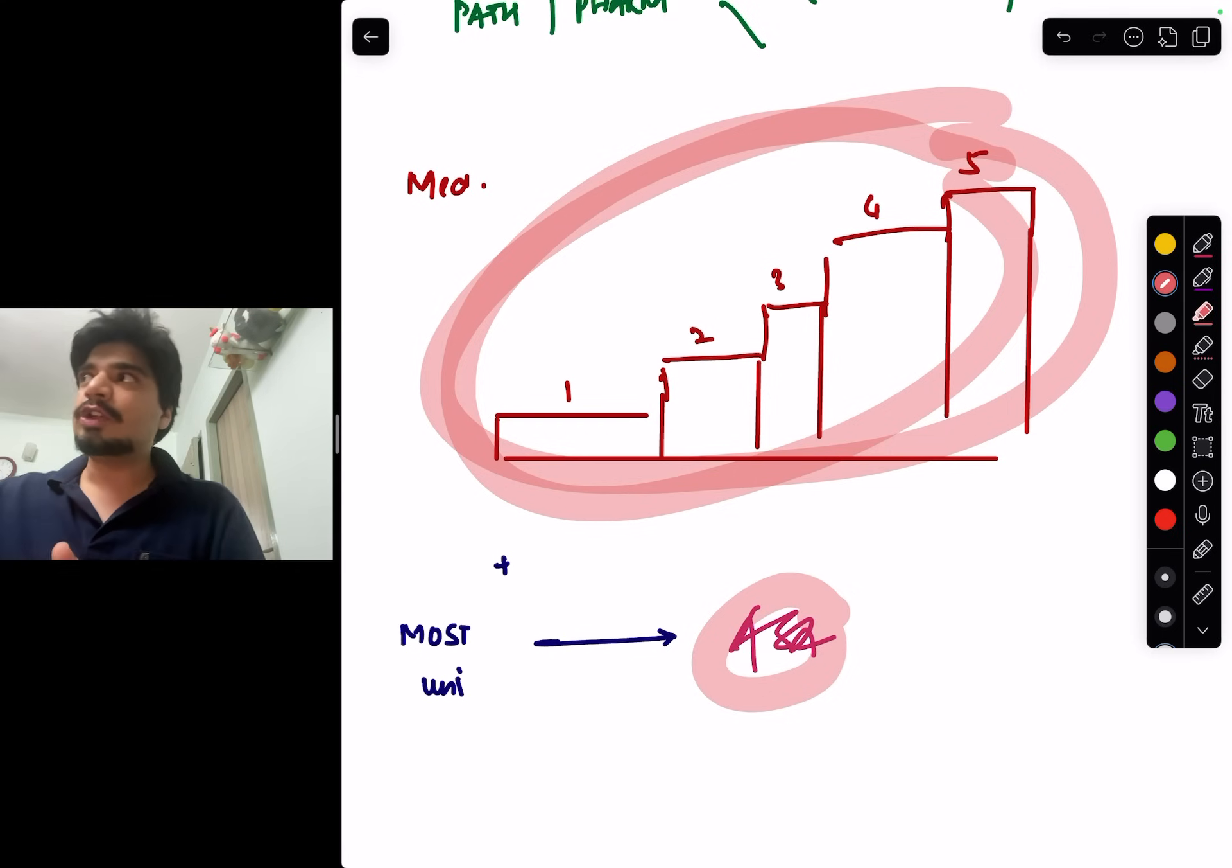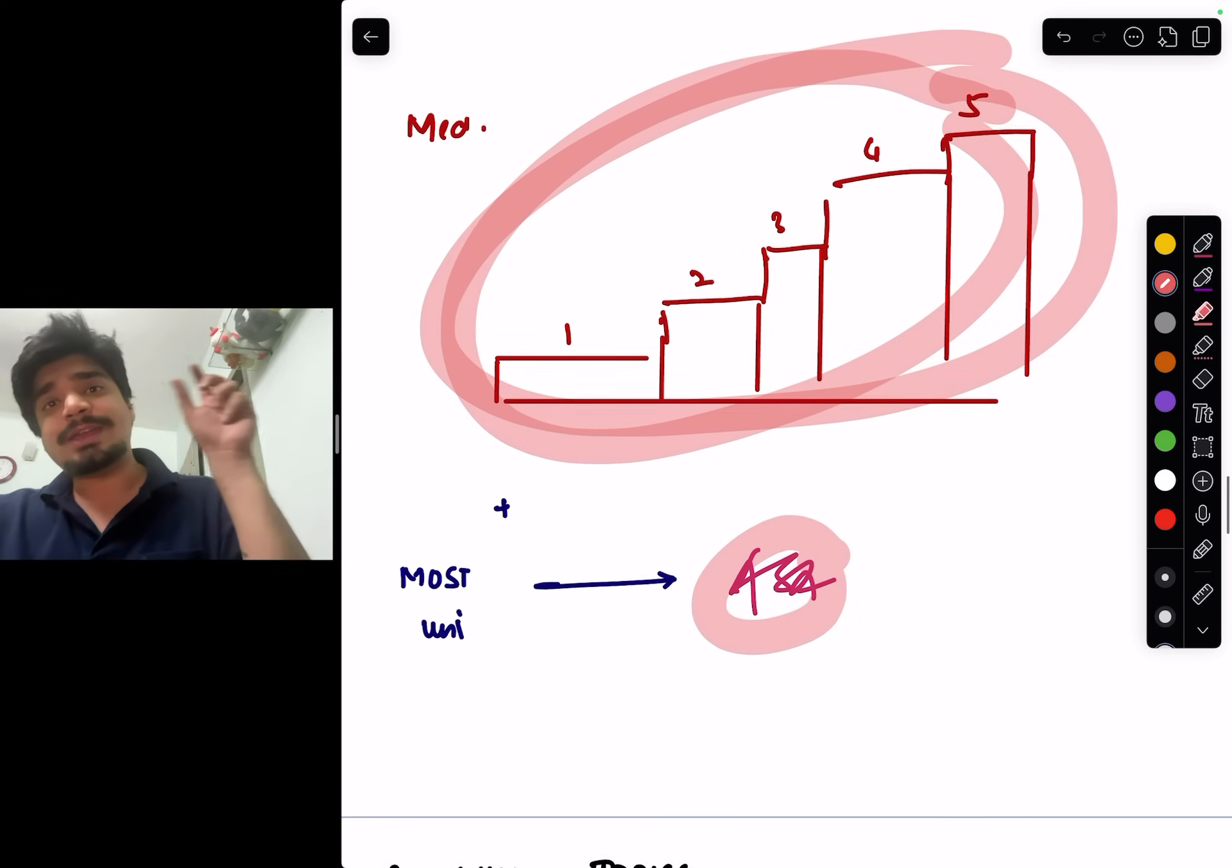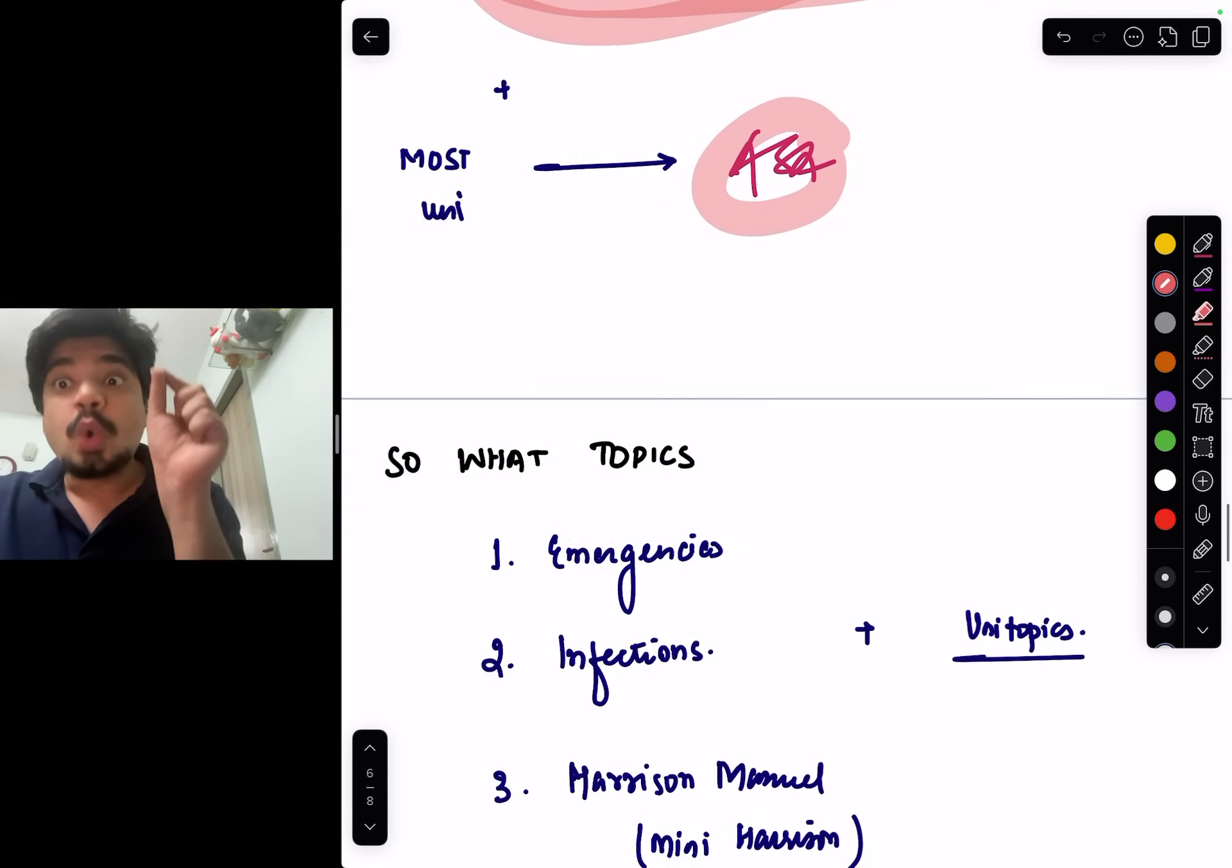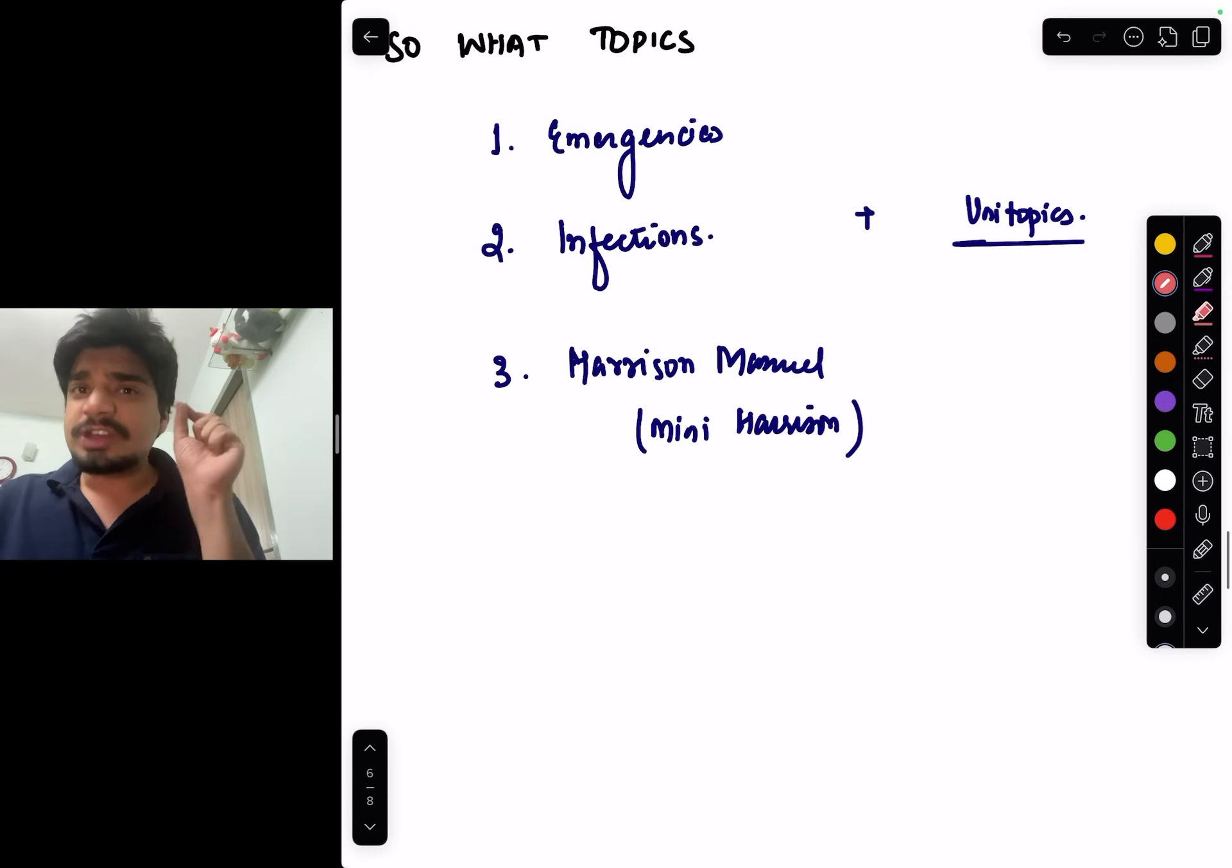And in those university topics, on evenings or on the weekends, do previous year questions. You can do it from Reflex, you can do it from Marrow, you can do it from whichever platform you are using, and you will have a proper 200 to 300 pages notes of core medicine.